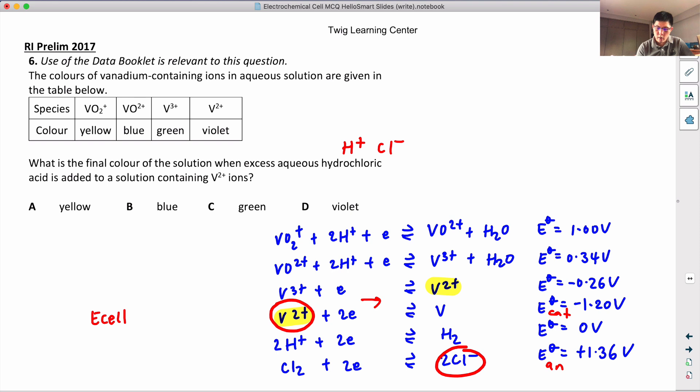Because this one has to undergo a reduction, and this must undergo oxidation. So it will look like -1.2 minus -1.36. And this is definitely less than 0, which means it's not feasible. The reaction is not feasible.